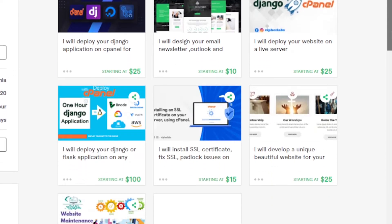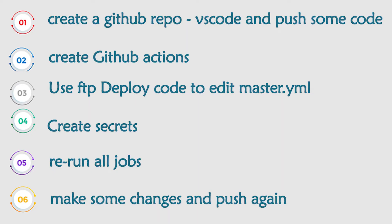With that said, let's just get started. We are going to create a GitHub repository using VS Code, push some code to GitHub, then on GitHub we're going to create some Actions. We are going to use the FTP Deploy, create our master.yml, create our secret keys, then run our jobs. We'll make some changes to our code, push again, and see if these changes are reflected automatically using CI/CD.